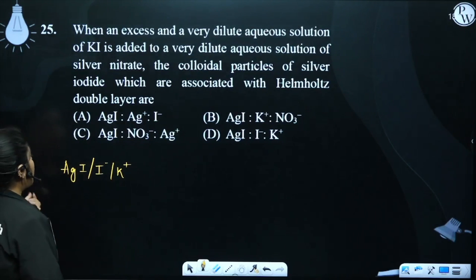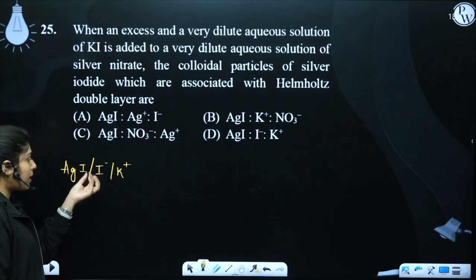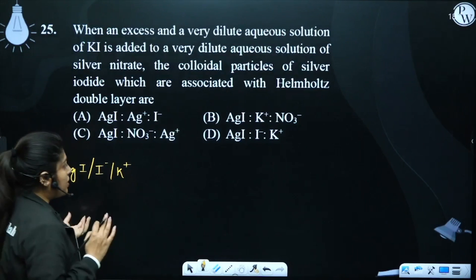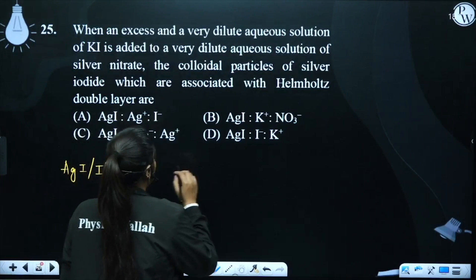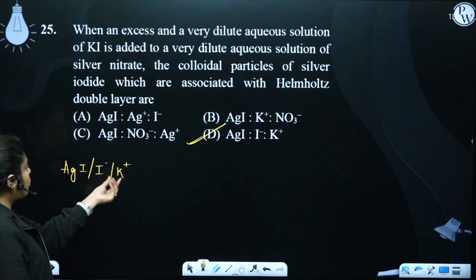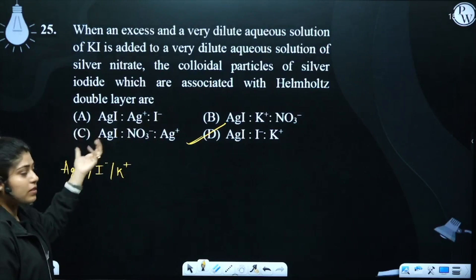Okay, so what will happen? AgI will absorb I minus, and I minus will attract potassium plus ions. So it will be AgI and I minus, option number D. These two layers will become a Helmholtz electrical double layer.